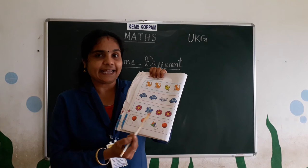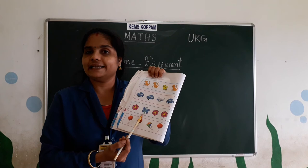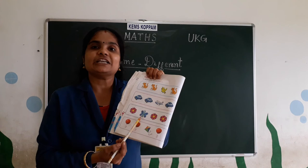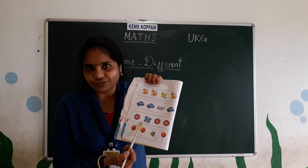Then, next picture. These are flowers. These are flowers, but only one is a butterfly. Okay. This butterfly is different from the flowers. So, you circle the butterfly. Okay. Then, last one.